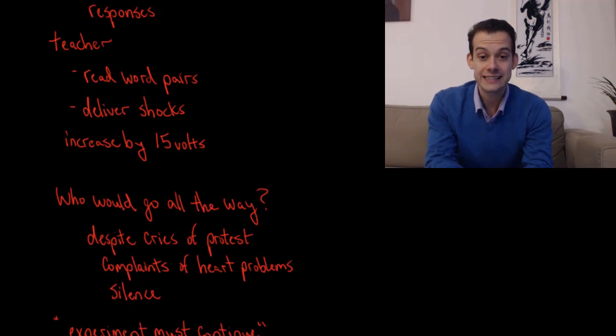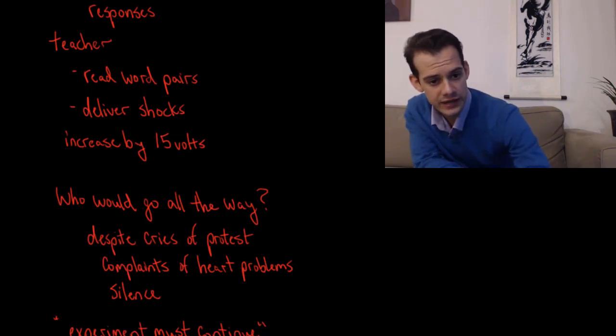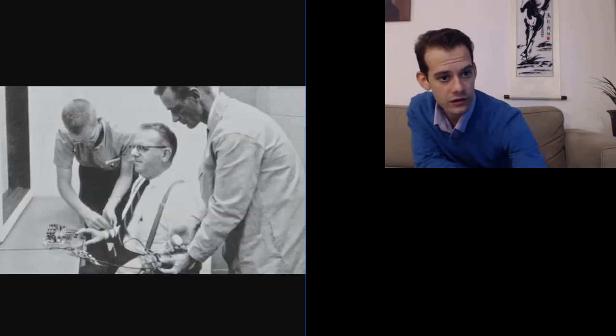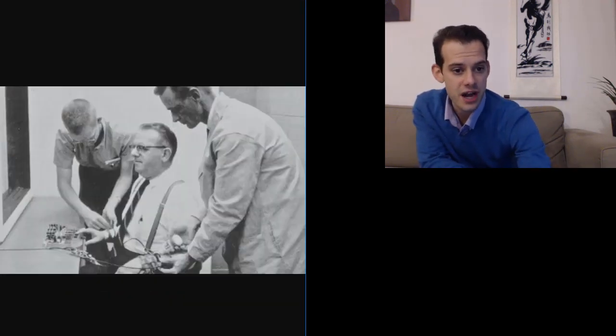And the teacher was given a sample shock of 45 volts to get a feel of what the learner would be experiencing and then the experiment would begin. What Milgram wanted to know was who would go all the way? Who would deliver these shocks to this learner? And here we can see a picture of a learner being strapped into the chair.